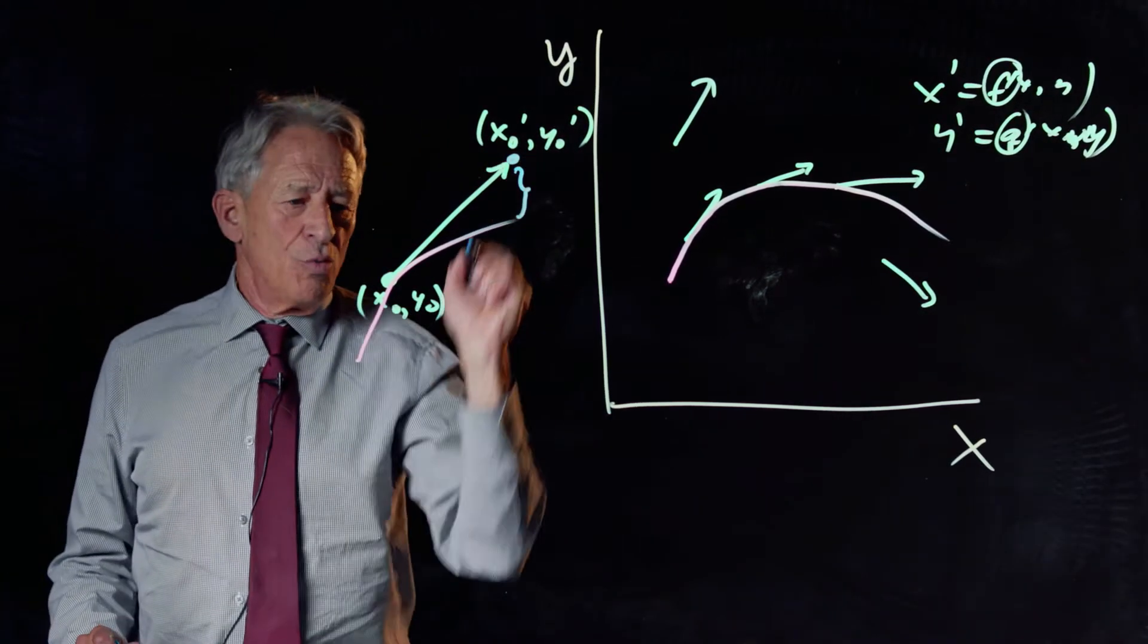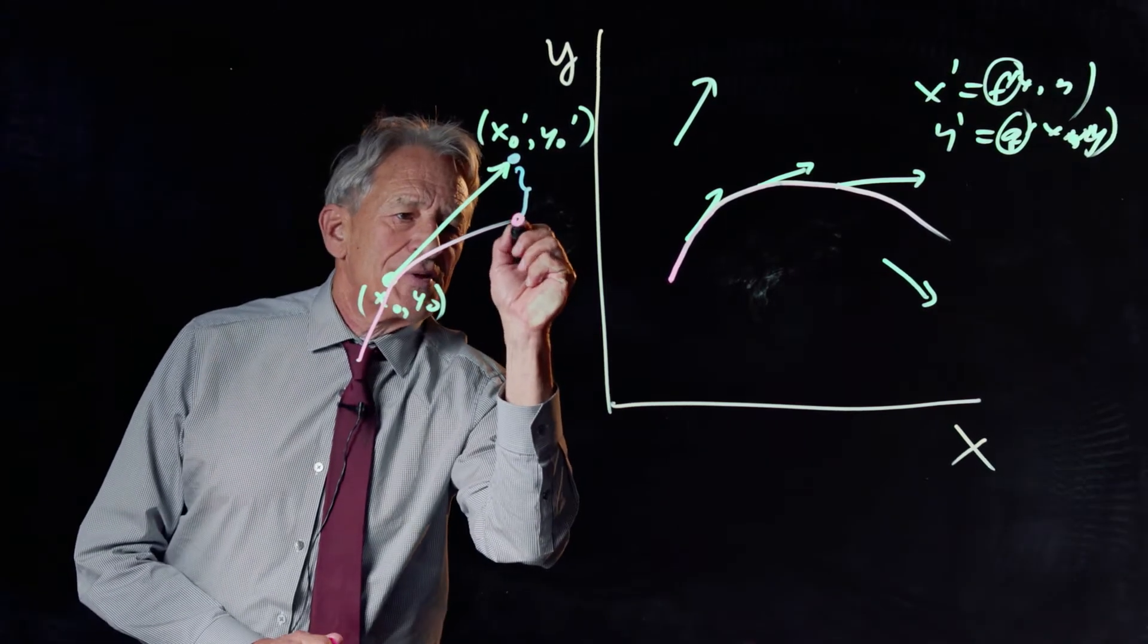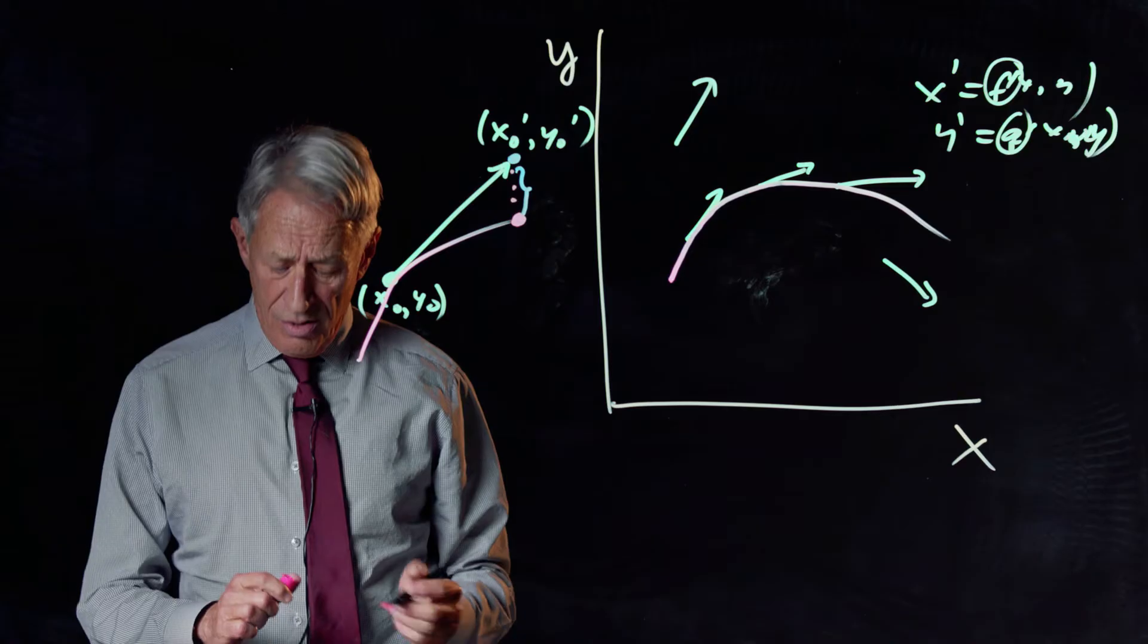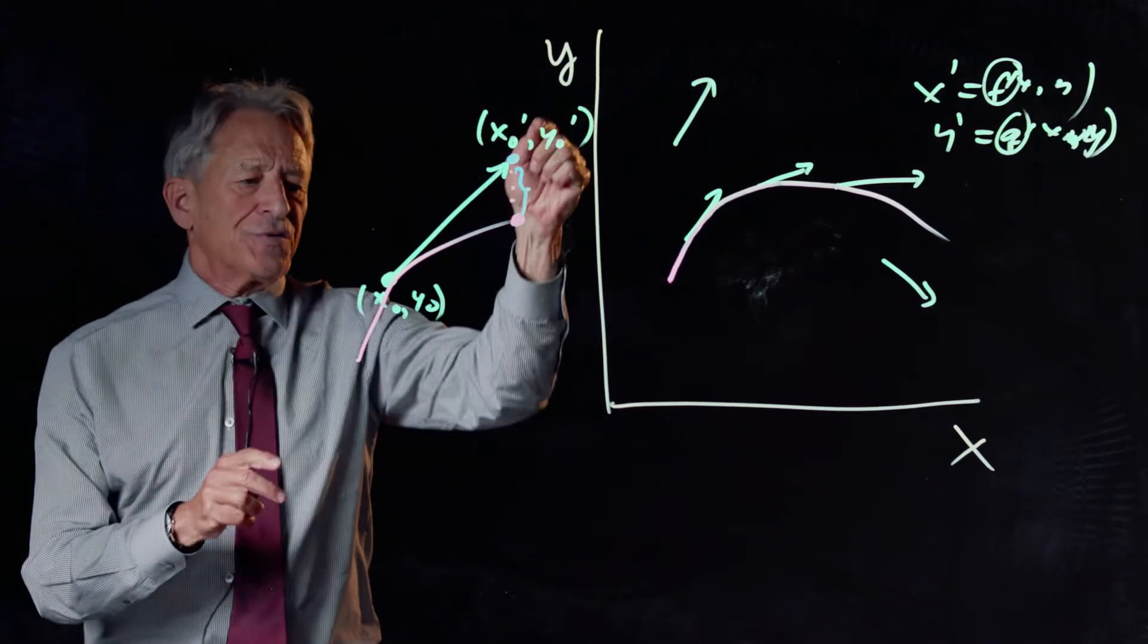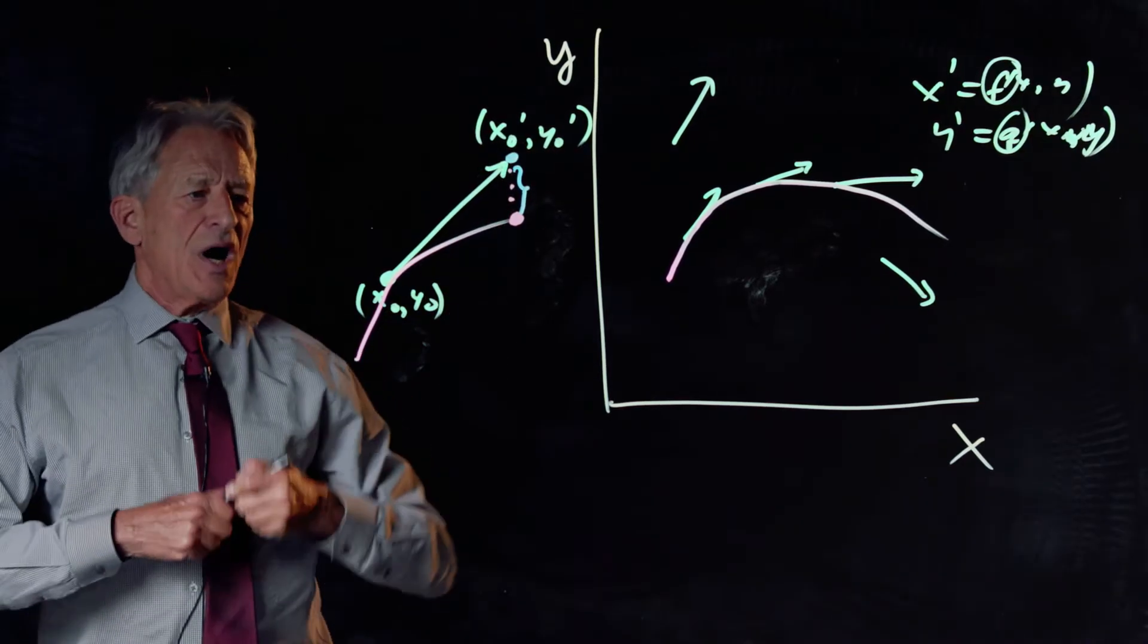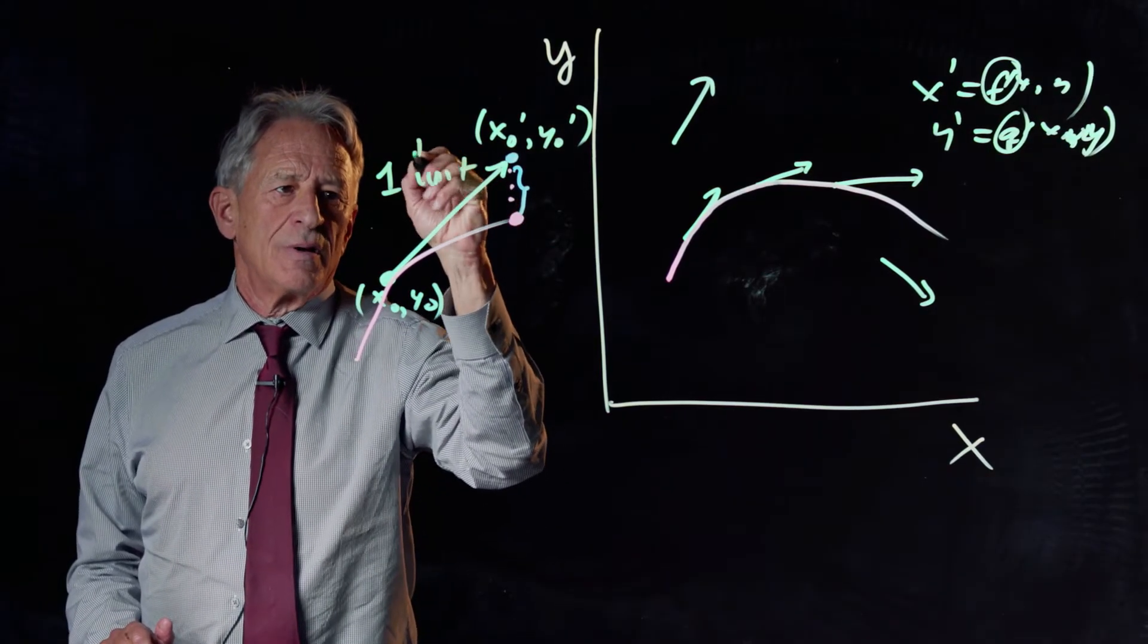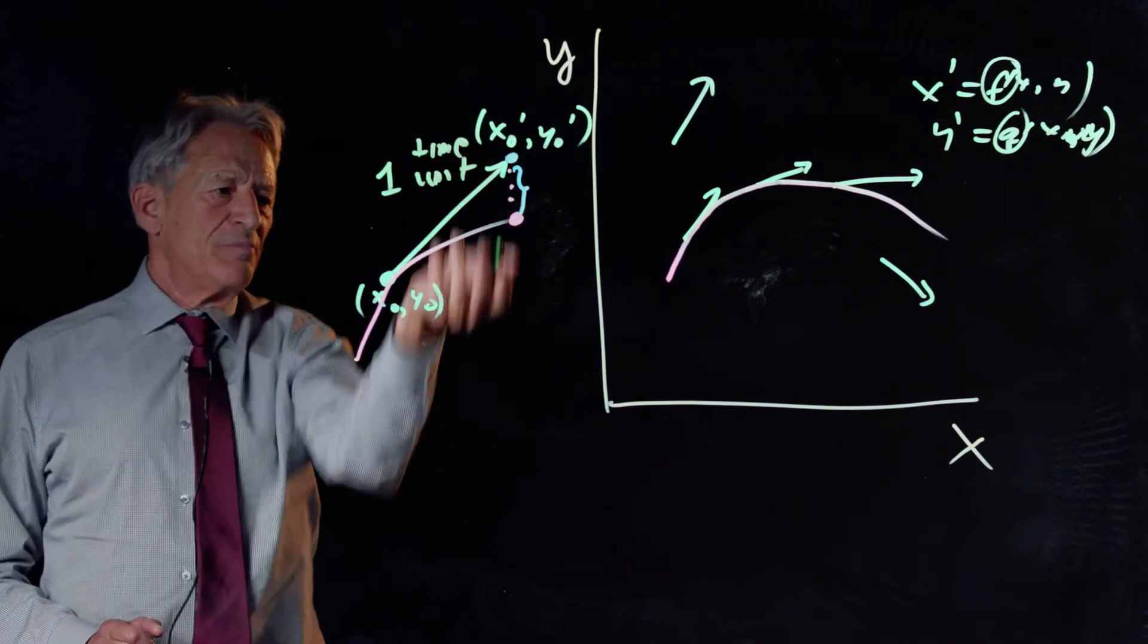And you would be wrong by that much. Because here's where you are, and the red curve is where the system really is. So this distance here is your error in this approximation. If you took a lurch forward of one time unit, one second or one hour or whatever, one time unit forward, you have missed by this much.